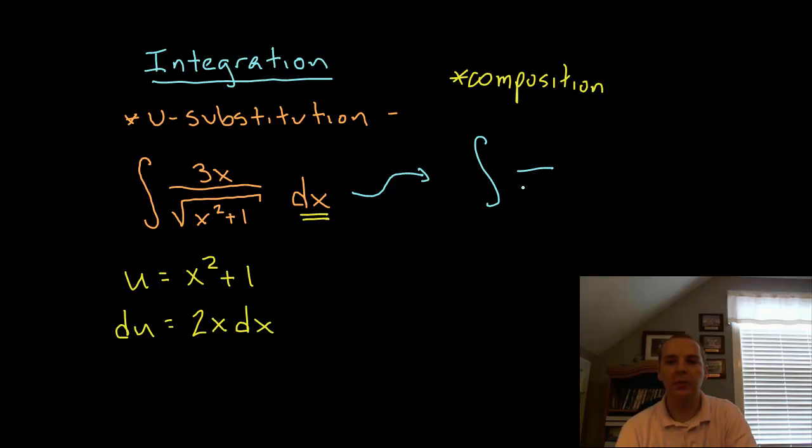So when we go to change everything out, everything almost works out pretty well. This would be the integral. You'd have division by the square root of u, right. But to get a du I need a 2x dx and unfortunately I have a 3x dx.